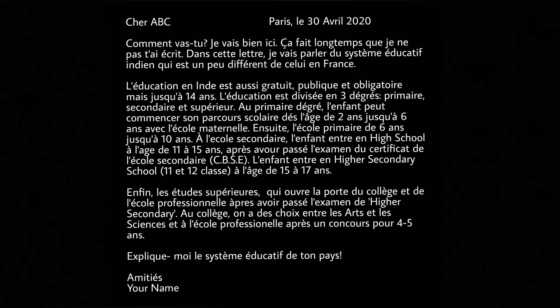L'école secondaire — then they shift to secondary education. L'enfant entre une high school à l'âge de 11 ans à 15 ans. Après avoir passé l'examen du certificat de l'école secondaire, which means the higher secondary certificate, the child continues from age 15 to 17 years. Here we have described the ages of secondary school and what certificates one obtains.